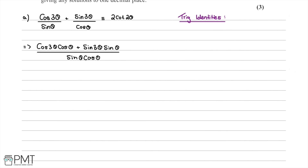Now we have a term with cos(3θ)cosθ and sin(3θ)sinθ in the numerator. We need to think about trig identities that can help us. We know that cos(a − b) = cosA cosB + sinA sinB.